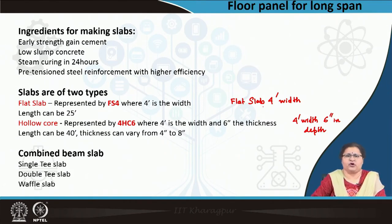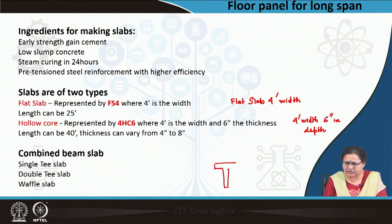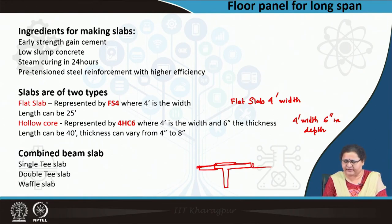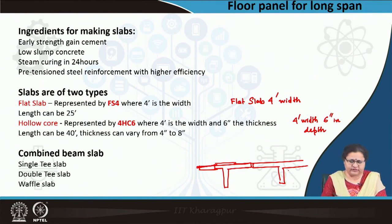Next, coming to the combined beam-slab: these have a beam associated with the slab, similar to a flat slab with ribs. These ribs act as beams and they usually look like the letter T — large flanges or projections act as slab, and the ribs act as the beam. There are different types: double T, single T, and waffle slab where T-ribs run in both directions, making it a waffle-like structure.